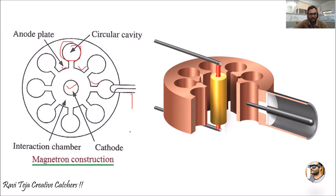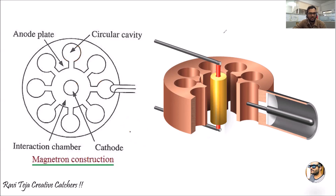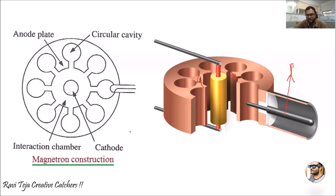It also consists of an RF input. That is what a simple structure or construction of a magnetron looks like. Now let's see the three-dimensional construction of a magnetron. This simple construction has been converted into a 3D structure. The center part — the gold one — is our cathode, and the plates around the cavities are considered as anode plates. This particular rod is considered as the RF input.